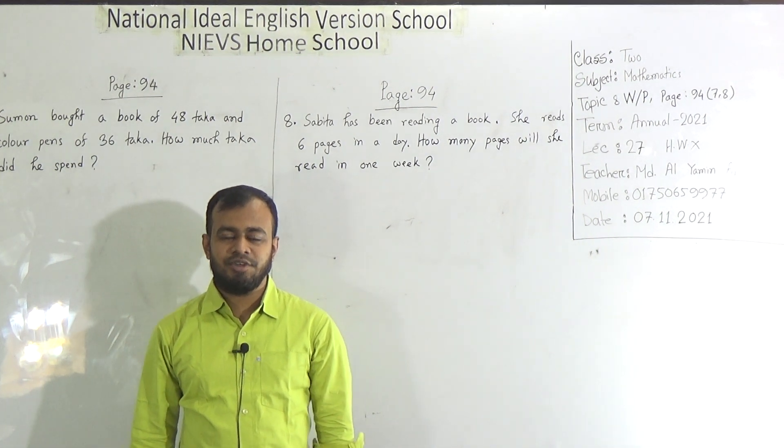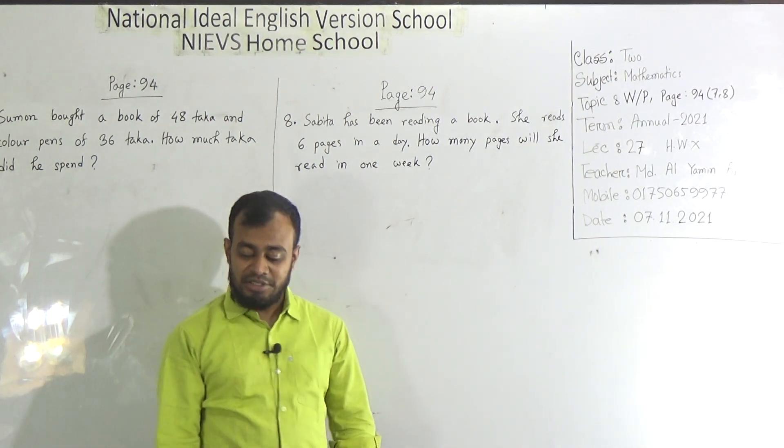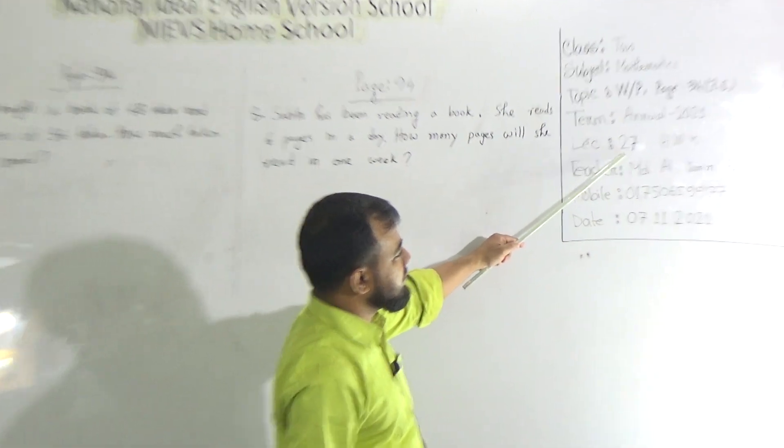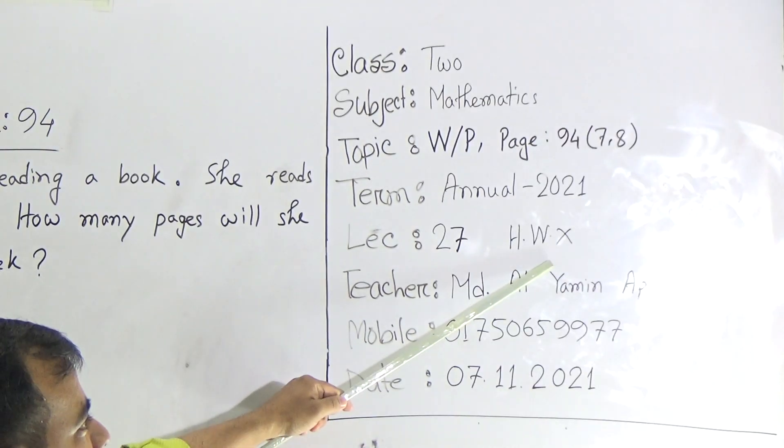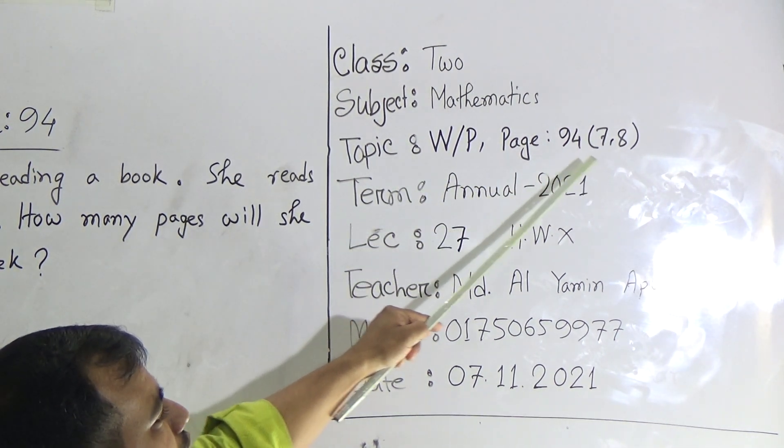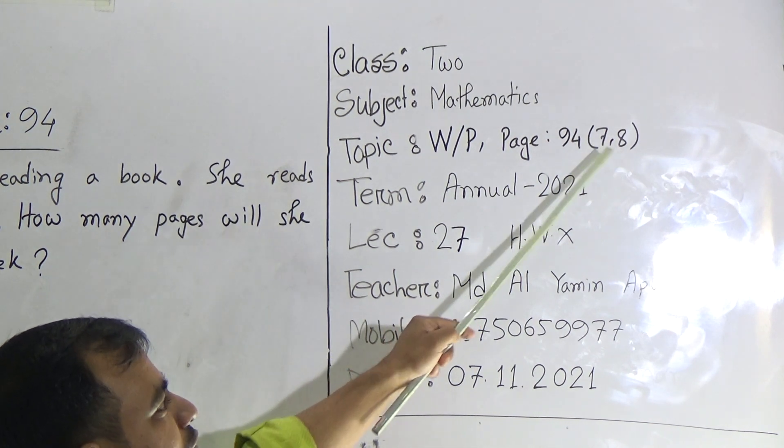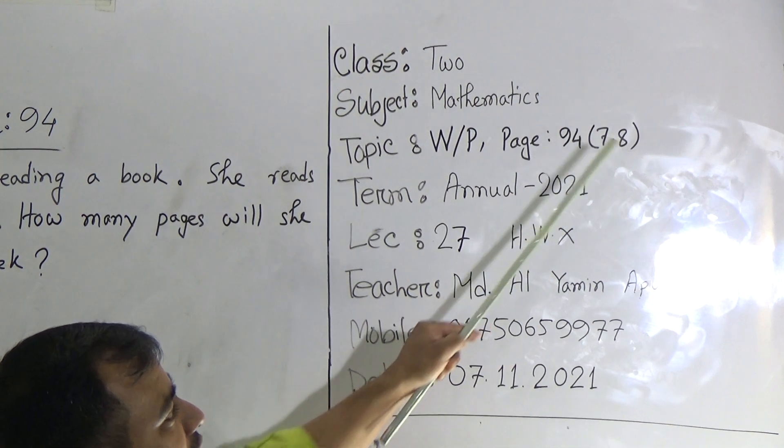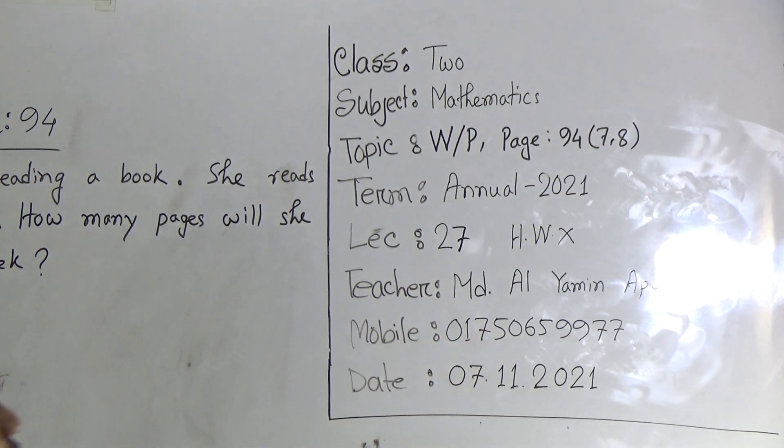Today I am going to take a math class for the students of class 2. My dear students, so let's reach out to our class. Our today's lecture number is 27. You have no homework today. Our today's topic is word problem. Page number is 94, problem number 7 and 8. This means that we will solve only two problems today, problem number 7 and problem number 8 from page number 94.